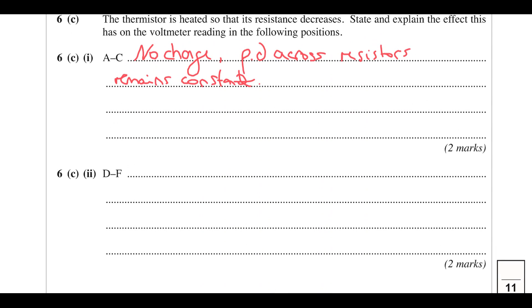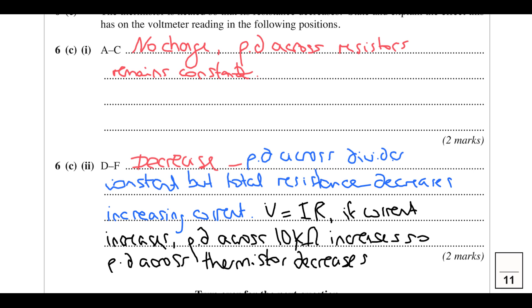Across D and F: heating the thermistor decreases its resistance. The total resistance in that loop decreases, so the current in that loop increases. Applying Ohm's law to the 10 kΩ resistor — V = IR — current increases and resistance stays the same, so the potential difference across the 10 kΩ increases. Since both must add up to the same total, the potential difference across the thermistor decreases.